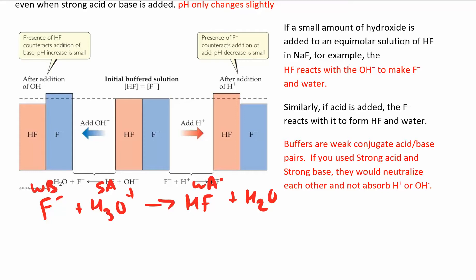Now, if you added a strong base, that should react with the weak acid, which would make some weak base and some water over there. So a weak acid plus a strong base gives you a weak base. That's kind of your cheat there. Strong acid plus a weak base gives you a weak acid. Strong base plus a weak acid gives you a weak base.